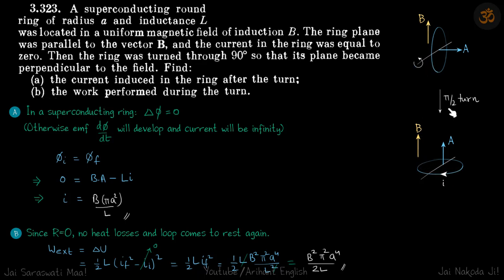So it's rotated by 90 degrees. We need to find what is the current induced in the ring after the turn and the work performed during the turn.